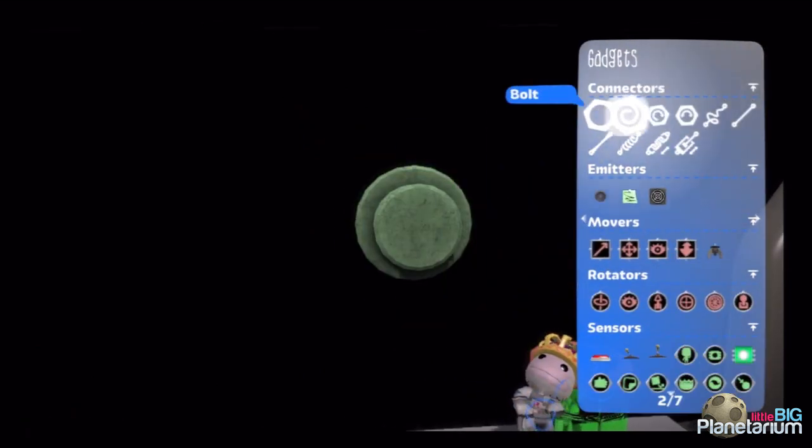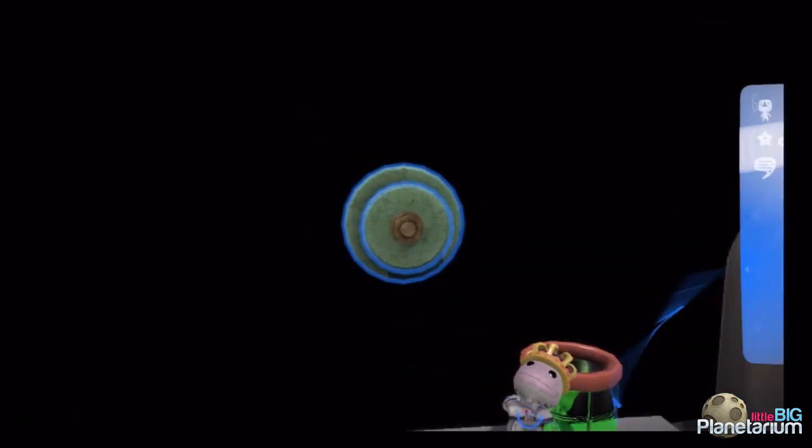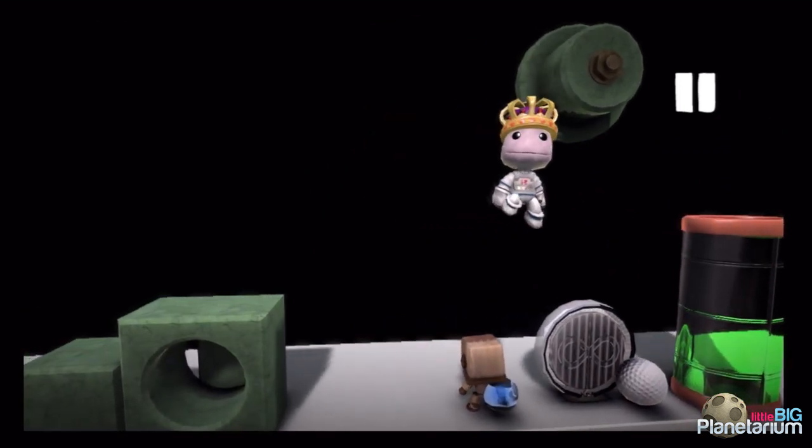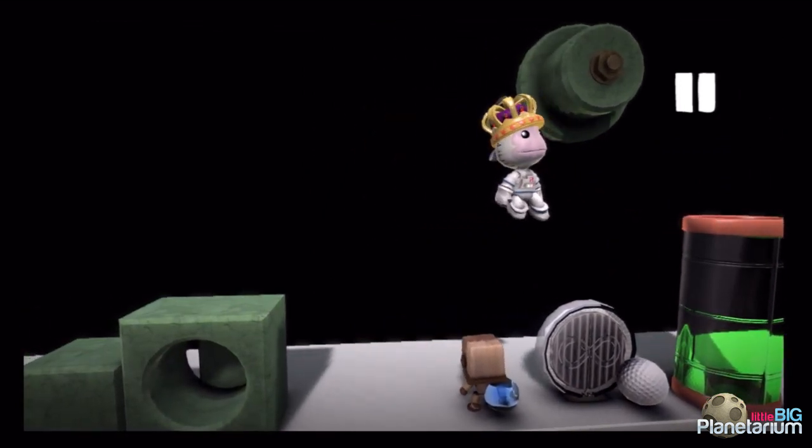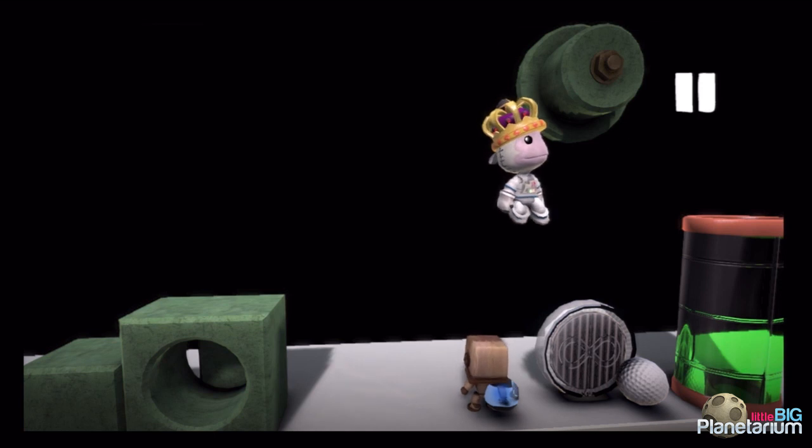And so I could attach a bolt to them if I really wanted. And now I could do whatever. So aligning things with the grid you can work around that with rods. It's a little annoying but it is possible to do that.